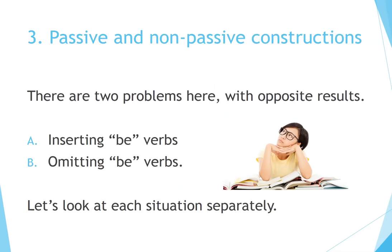Number 3: Passive and Non-Passive Constructions. There are two problems here with opposite results: A. Inserting B verbs unnecessarily, and B. Omitting B verbs where they are required. Let's look at each situation separately.